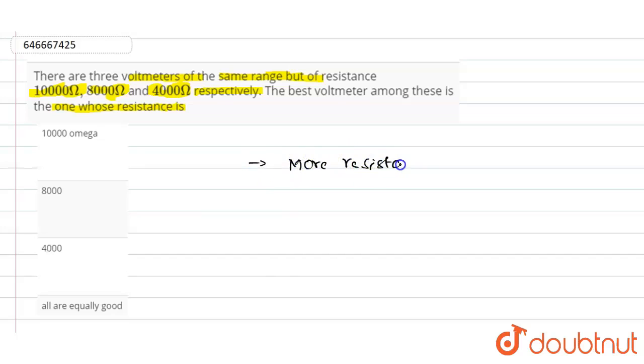More if we have the more resistance in the circuit, so that will cause less current to flow. So more resistance will cause less current to flow.